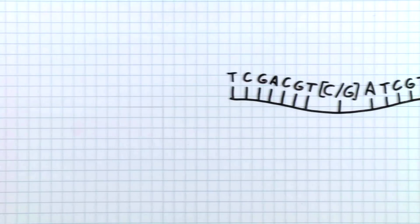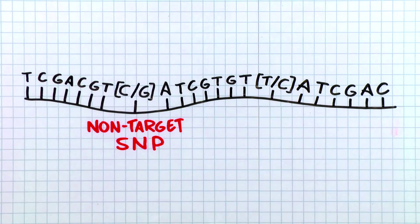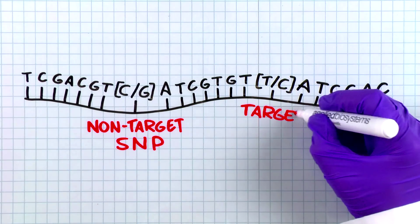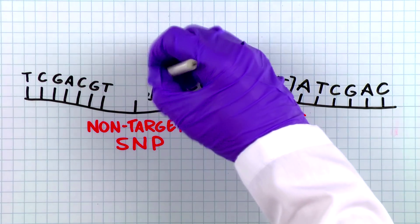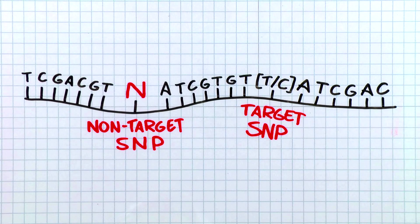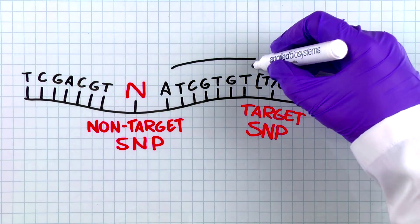Let's take a look at our lab book. First, we recommend masking non-targeted SNPs in the sequence that you are submitting. Masking is the process of substituting an N for an existing base. The custom SNP assay design pipeline will not design a primer or probe that spans a masked base.